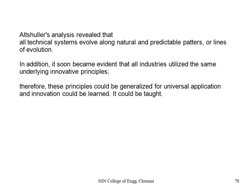That is how he discovered the 39 engineering parameters and the 40 methods. He was convinced that unless there is a contradiction there is no innovation, and that there are only 39 problems recurring again and again, resolved by 40 ideas again and again. But when he proposed this to Stalin, he was arrested and imprisoned for 25 years, charged with conspiracy to reveal military defense secrets. He was trying to demonstrate that anyone can invent — but this was considered against the government.